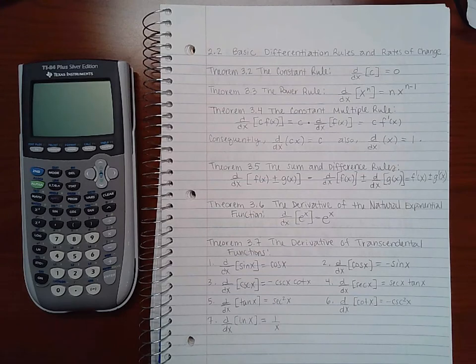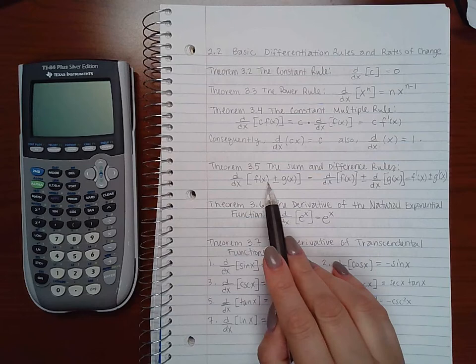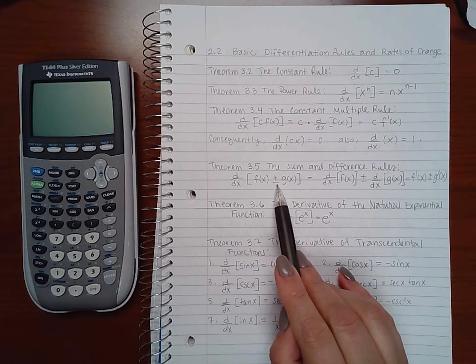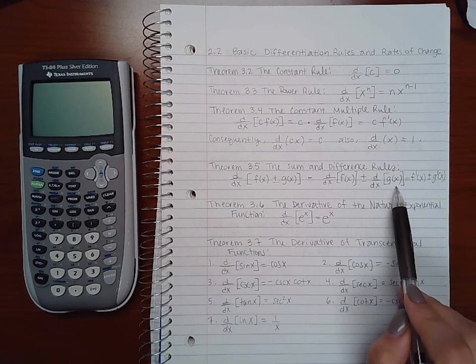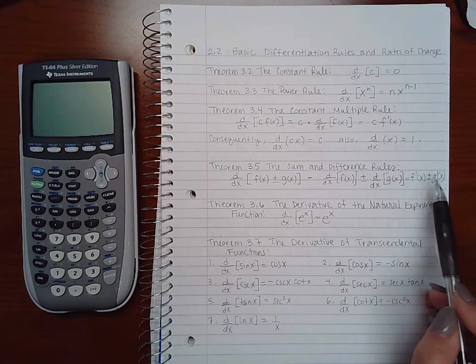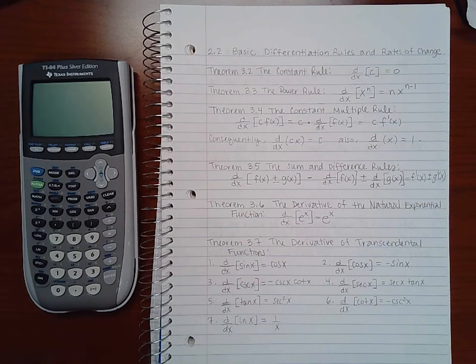Now theorem 3.5 is the sum and difference rules. So if you do have two different functions and you add or subtract, it would be the same as taking the derivative of each term individually. So that you end up with the derivative of one term plus or minus the derivative of the second term.